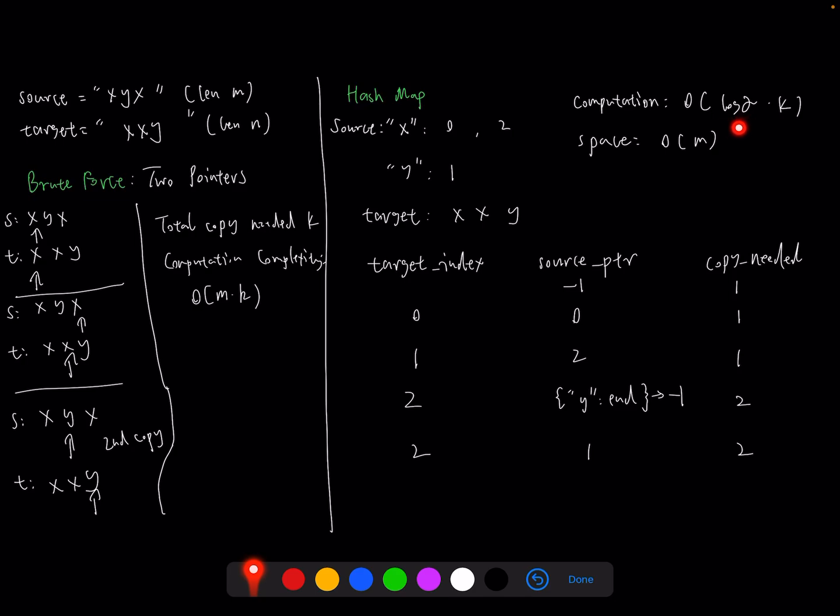As you can find, the computation will be less than the brute force. Something around log alpha. Alpha here means how many binary searches we need to do, but it's hard to determine. It's definitely smaller than M. We still need to multiply K here because we need to iterate K times of the target. Since we are using a hash map here, we need to take big O of M space complexity.